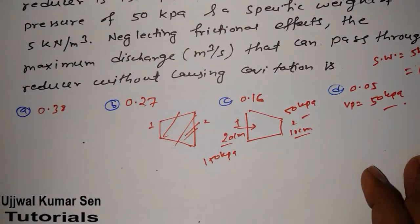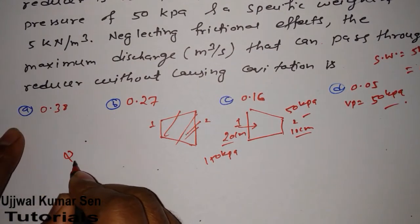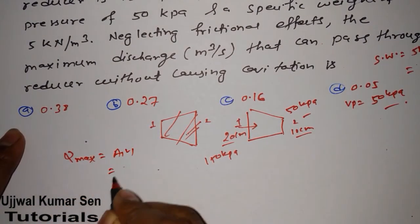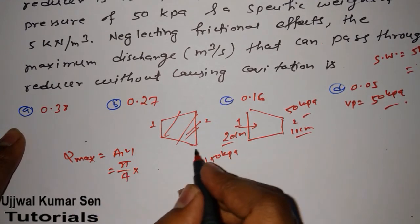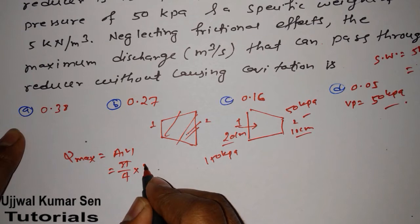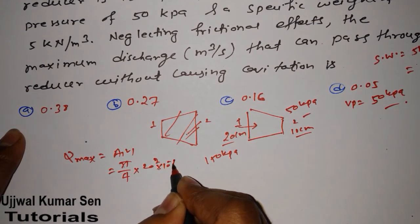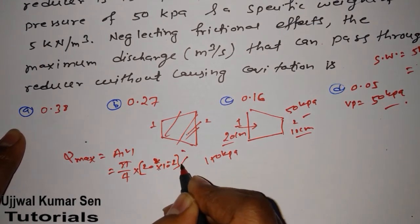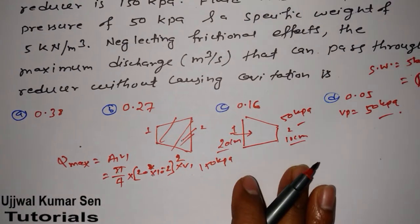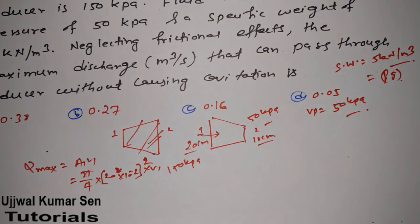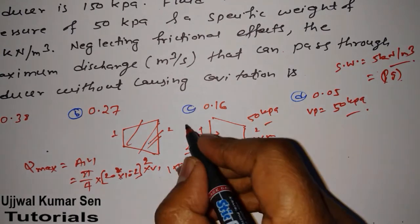We need to find Q_max = A₁V₁ = (π/4)D₁² × V₁. D₁ is 20 × 10⁻² squared, times V₁. Right now we don't know V₁, so by implementing Bernoulli's equation we can find out the value of V₁ because we have all the other values.